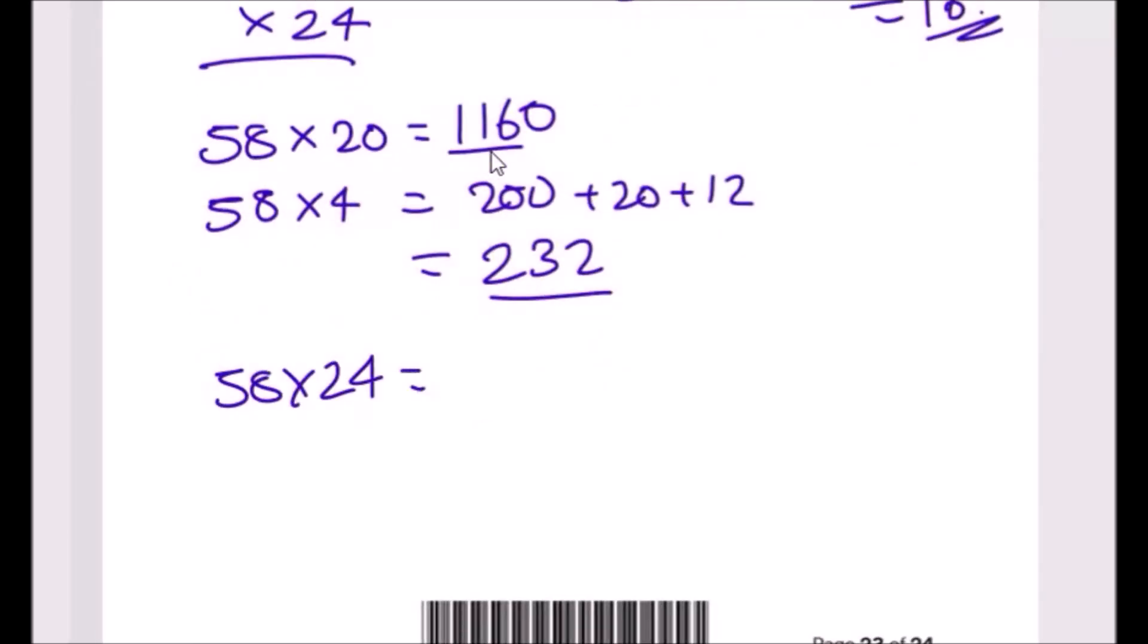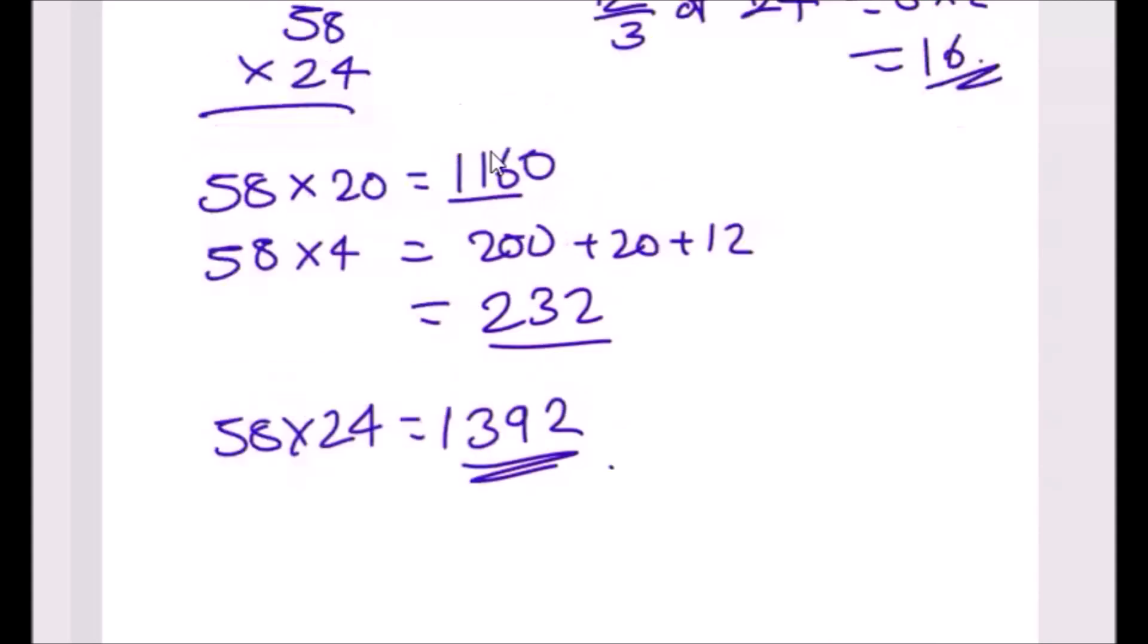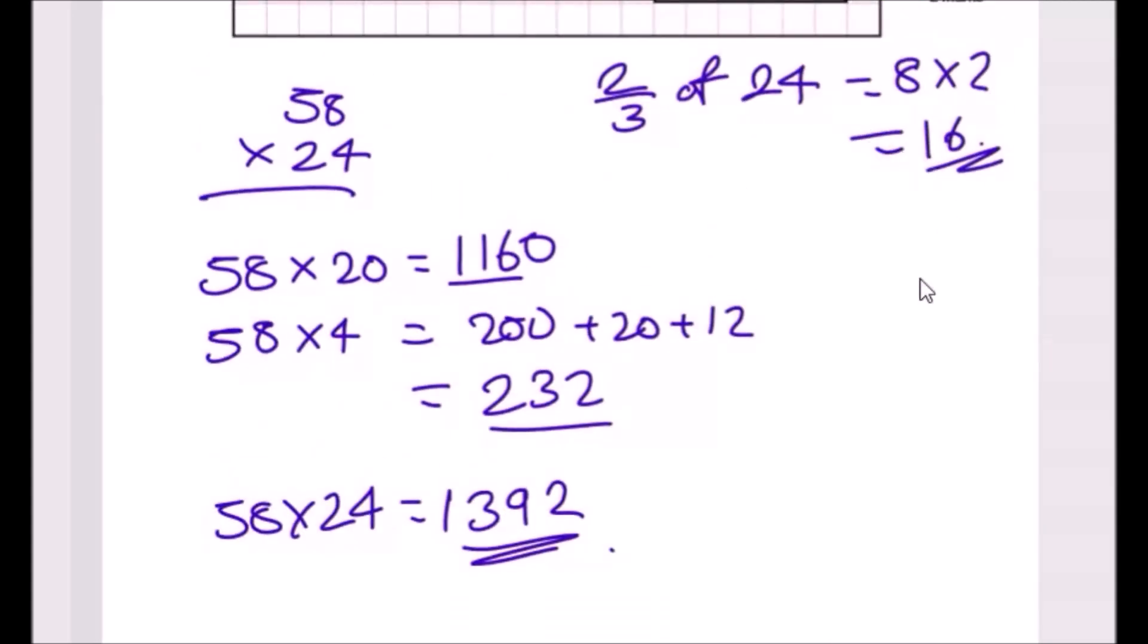58 times 24 is going to give us 1160 plus 232, which is 1392. Finally, add 16 to that, so 1392 plus 16. We're going to have 8, 0, 9 plus 1 is 10 carry the 1, 1 plus 3 is 4, and 1, giving us 1408.